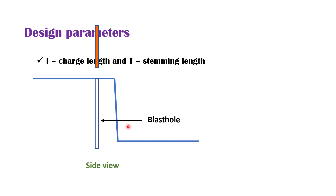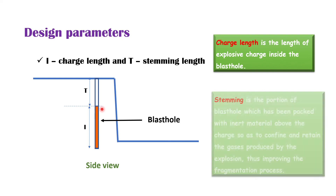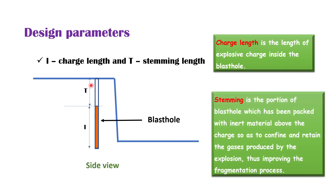Next is the charge length and the stemming length. This is the open cast bench and this is the blast hole. In this blast hole, some explosive charge has been provided. The length of the explosive charge is called the charge length — that is, the length of explosive charge inside the blast hole. The stemming, T, is the portion of the blast hole which has been packed with inert material above the charge column, so as to confine and retain the gases produced by the explosion, thus improving the fragmentation process.